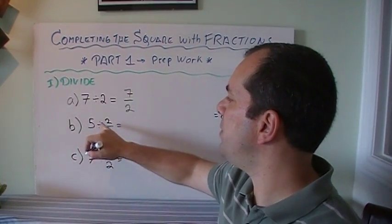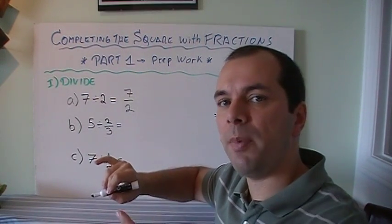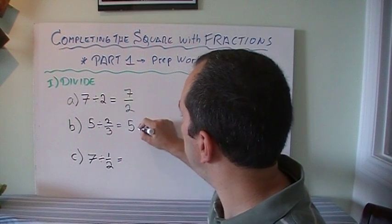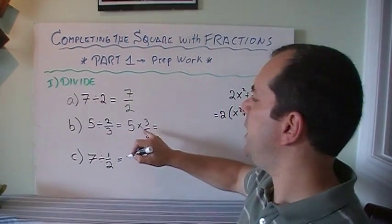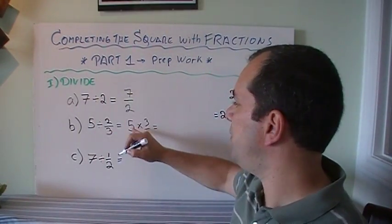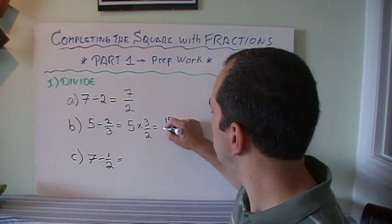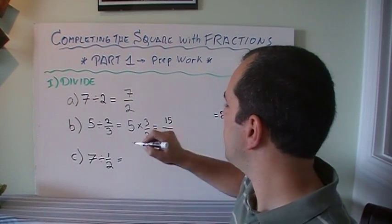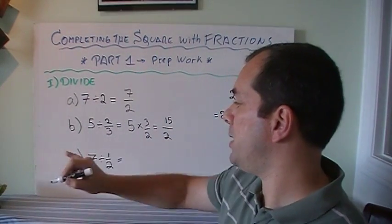If I've got 5 divided by 2/3, when I divide by a fraction, I actually multiply by the reciprocal. So it would be 5 times 3/2. And to do this, I basically multiply the tops and I multiply the bottoms. So 5 times 3 is 15, and 1 times 2 is 2. Now that's an improper fraction, but that's okay. We're going to leave it like that.